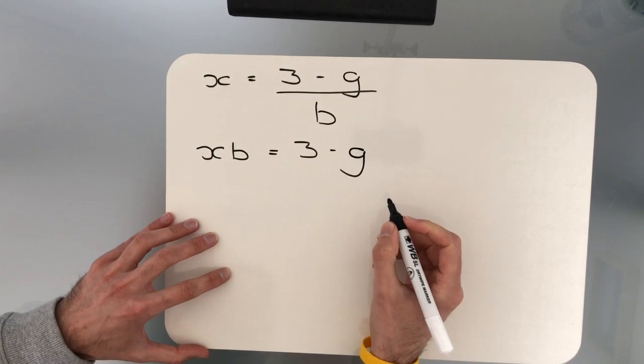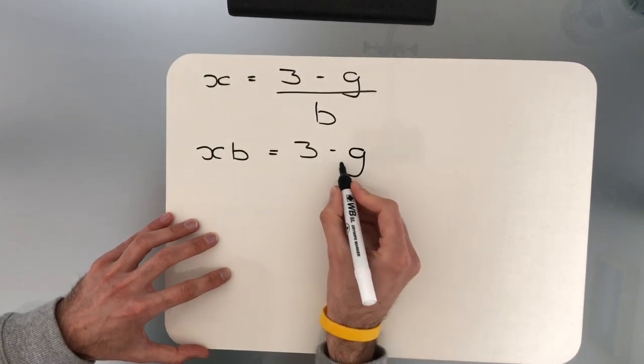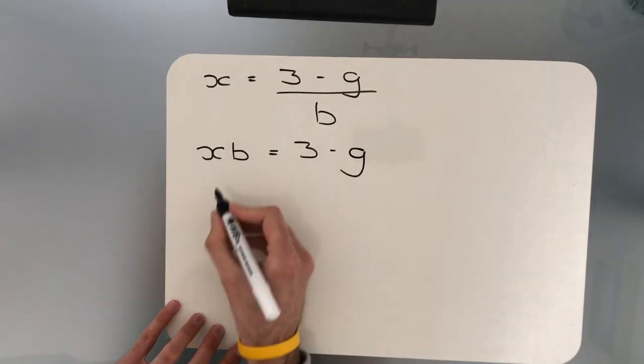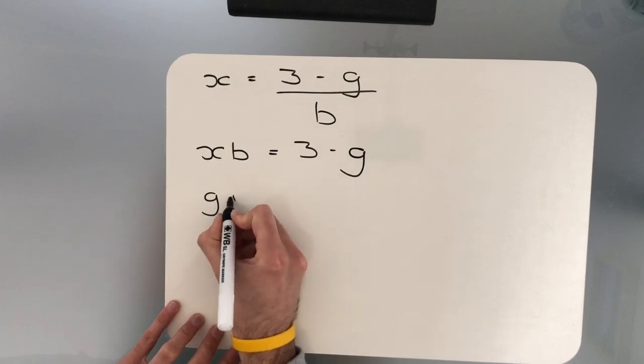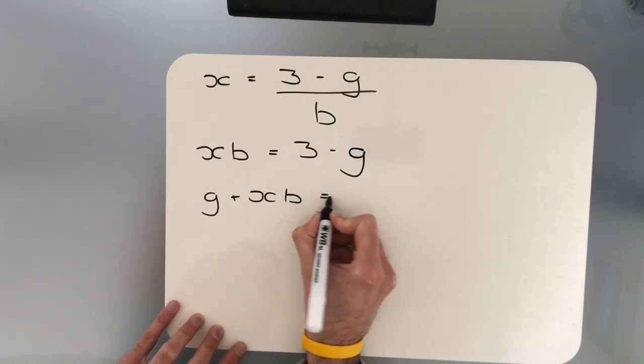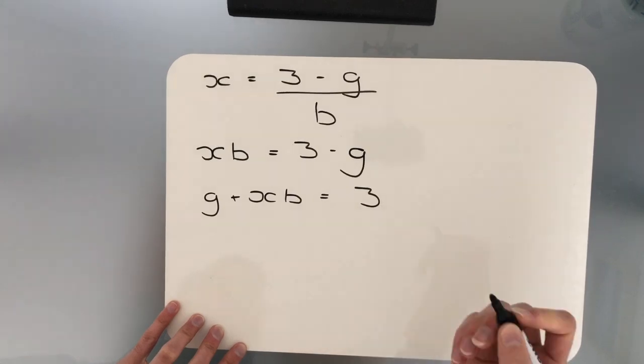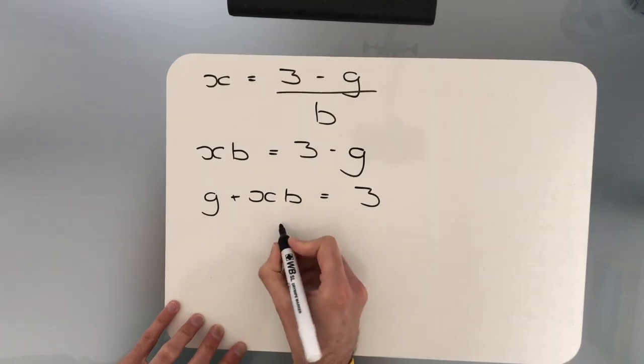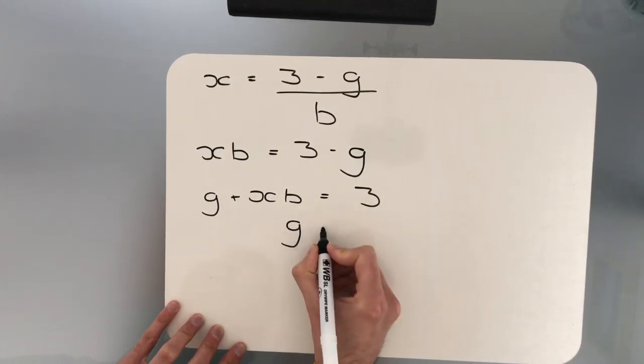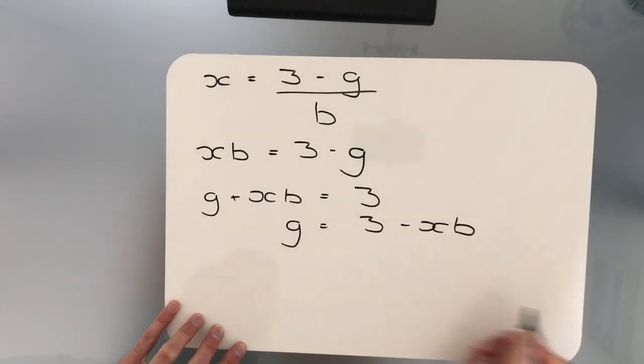Now, whatever we're trying to make the subject of the formula, you always want that to be positive. Currently, the G is negative. So to make it positive, we're going to take it over to the opposite side. So we now get G add XB is equal to 3. Now, we're still using our rules from BIDMAS. The XB is adding onto the G. So when we take that over, it's going to subtract. So G is equal to 3 subtract XB, and now G is the subject of the formula.